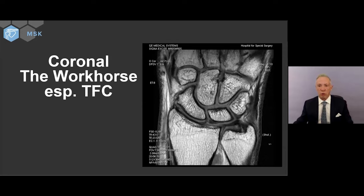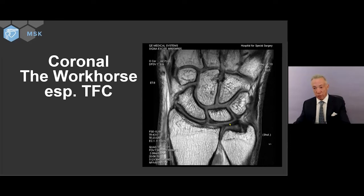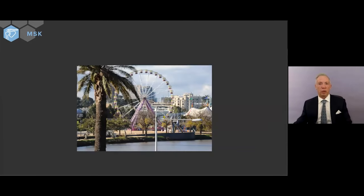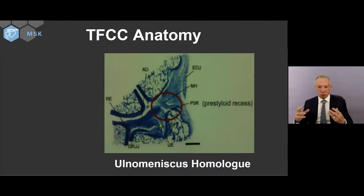Back to this high-resolution coronal T1-weighted image — the workhorse for the wrist. We see the scapholunate and lunato-triquetral ligaments. Here is the rather trapezoidal shape of the triangular fibrocartilage, which looks triangular in the axial projection. Here are the radial attachments — that is radial hyaline cartilage, not a tear. There is ulnar hyaline cartilage and synovium. There is the foveal attachment, the styloidal attachment, and one of the distal attachments known as the ulnocarpal attachment. These wispy structures represent the ulnar collateral ligament — not a true ligament, but a condensation of the ulnar capsule.